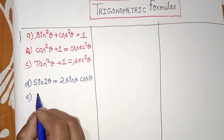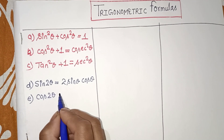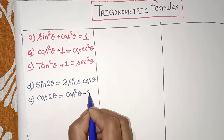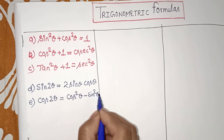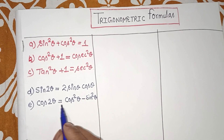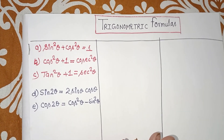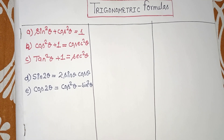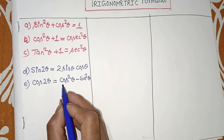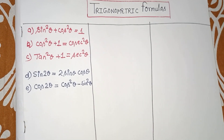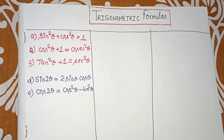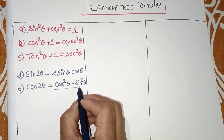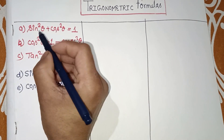The next formula is cos 2θ. cos 2θ = cos²θ − sin²θ. Many children confuse this formula and write sin²θ − cos²θ instead. When we write cos 2θ, understand that cos comes first, so we write cos²θ − sin²θ. We will also look at the simplification of this formula, because sometimes we need alternate forms. The simplification comes from the first formula.